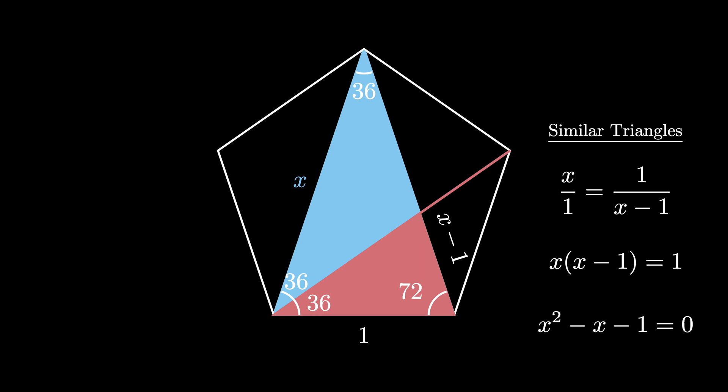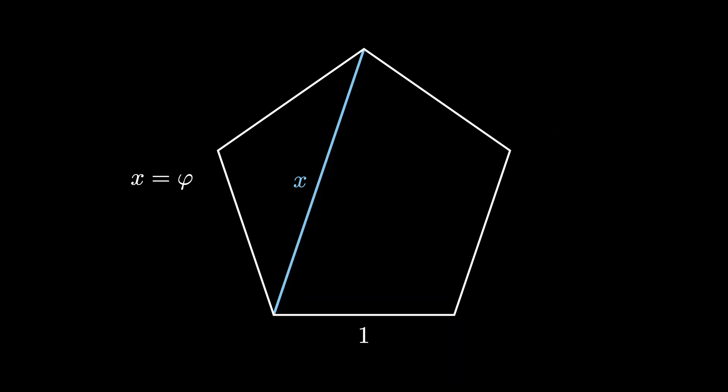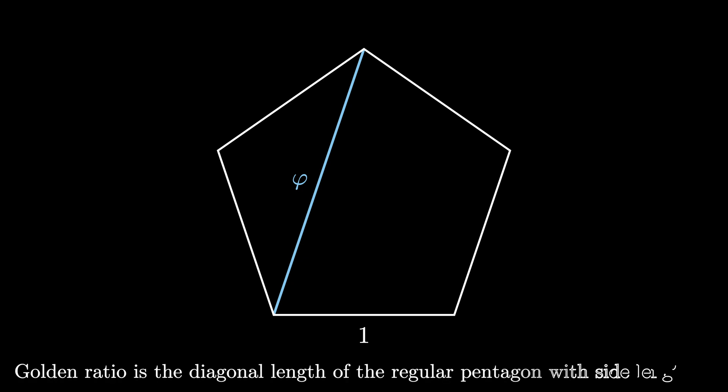This equation has two roots, and only one of them is positive, which is x equals phi, which is the golden ratio. Therefore, the length of the diagonal in this regular pentagon with side length 1 must be phi, the golden ratio.